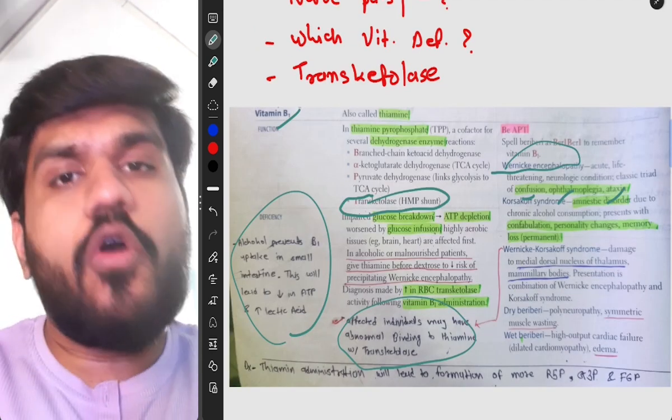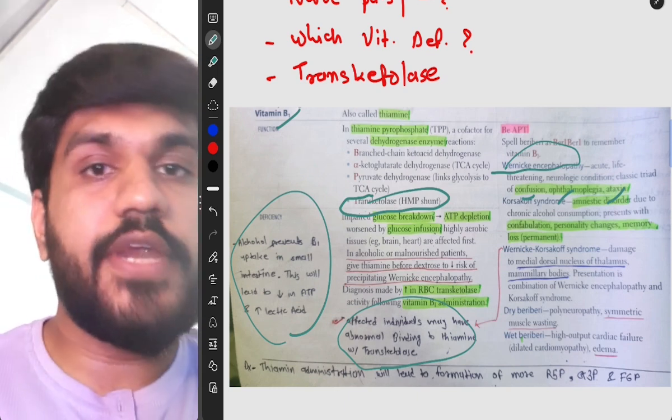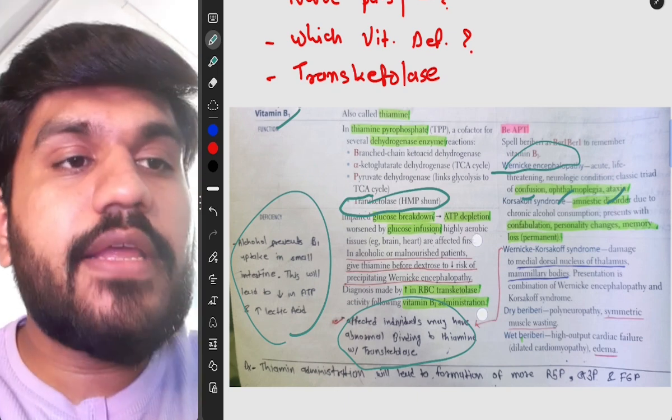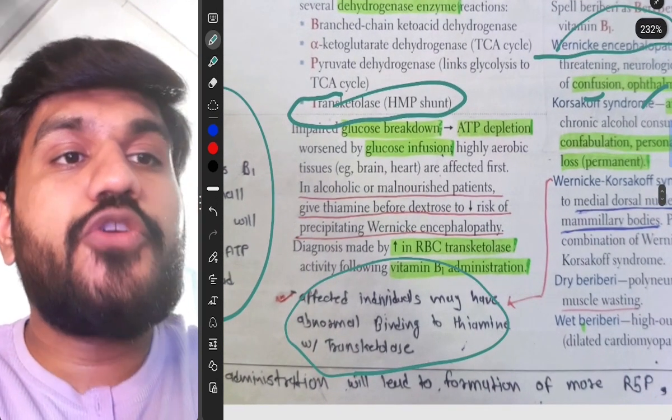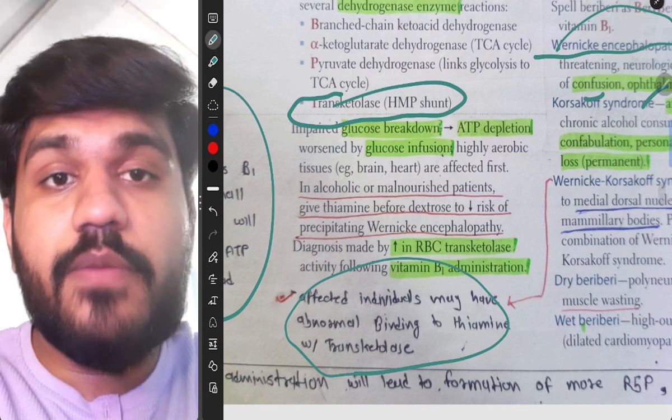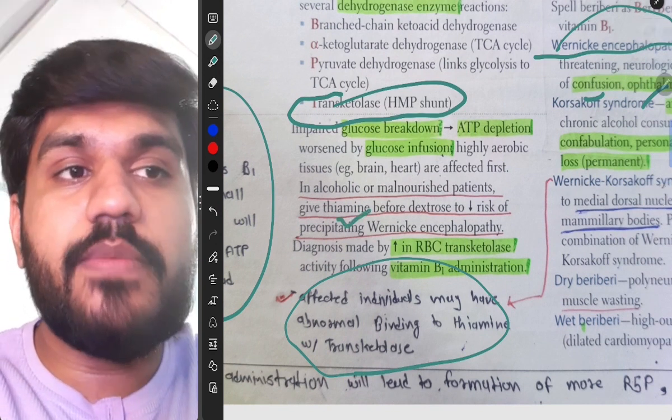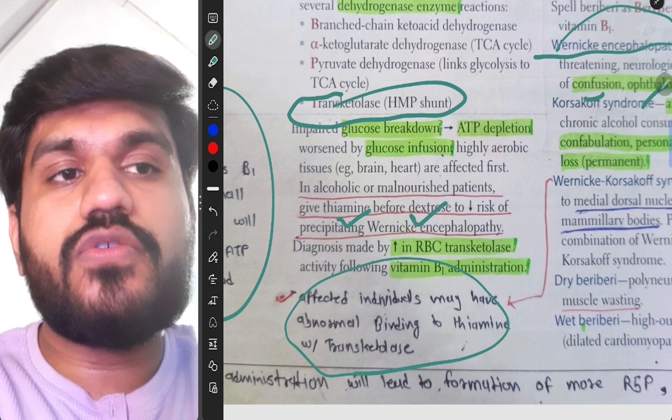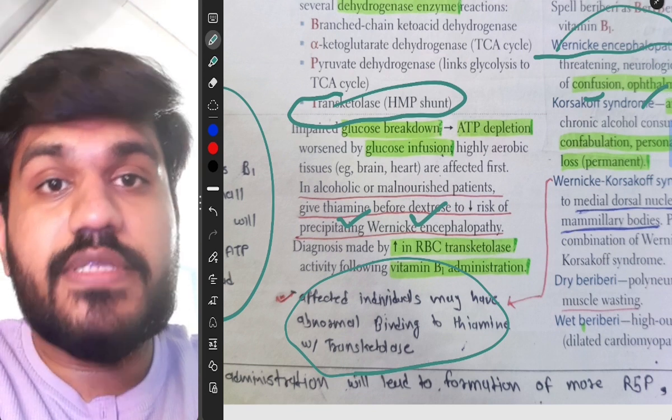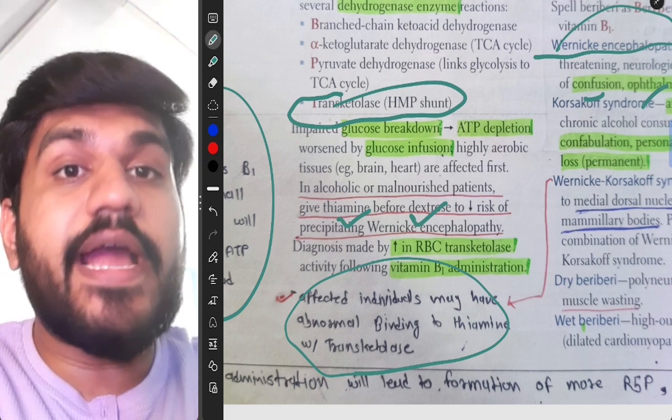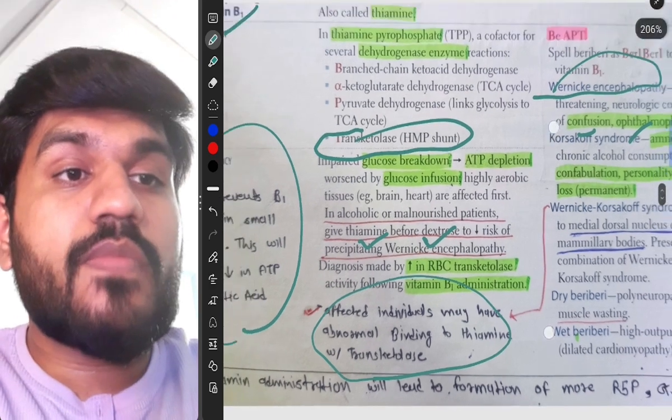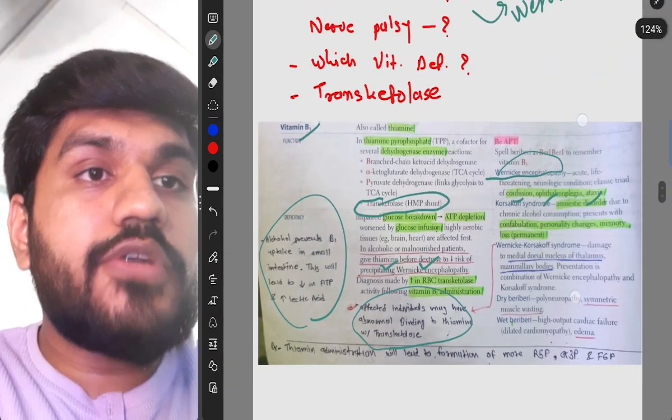So this is really nice and concise information that you will find for vitamin B1 deficiency. And also you will find that they often ask the treatment, how you will treat the alcoholic patients. And here also it is written that you will first give thiamine, you will first give thiamine then you will give dextrose because if you give dextrose first then thiamine deficiency will get worse.